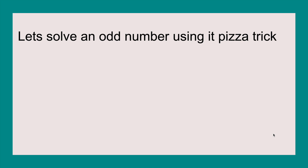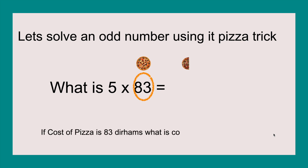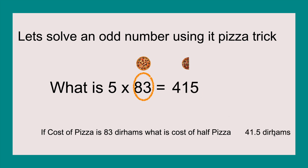Next, let's solve an odd number using the pizza trick. What is five times eighty-three? Circle the eighty-three, put the full pizza, then half pizza. And then we write out our sentence if we really need it: if cost of pizza is eighty-three, what is cost of half pizza? Four point five dirhams. So we take that number and the answer is four hundred and fifteen.